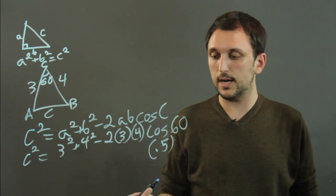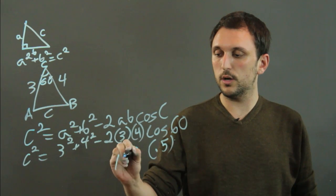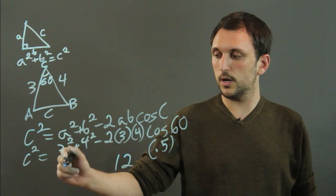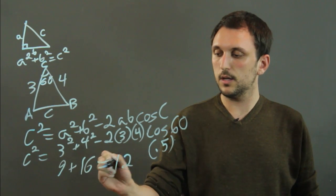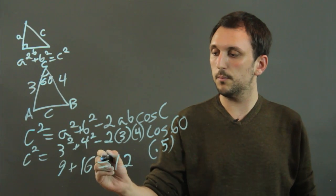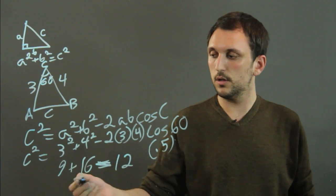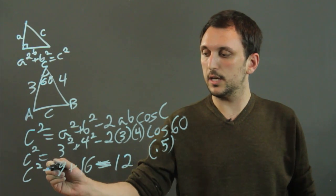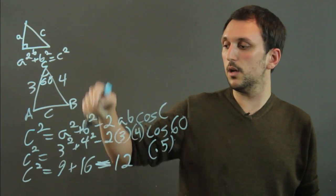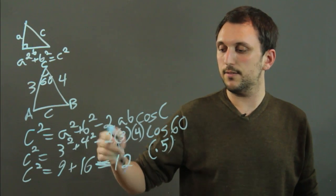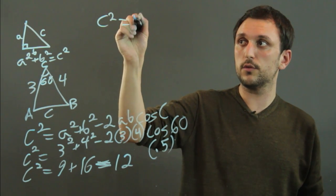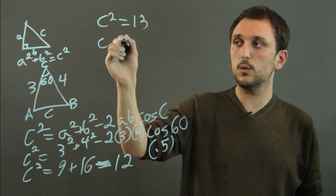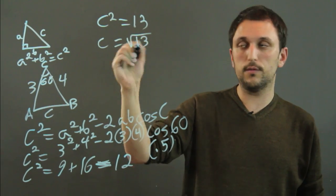So we have 12 over here we have 3 squared is 9 plus 4 squared which is 16 minus 12 and c squared is going to equal all that so we'll bring the math up here 9 plus 16 is 25 minus 12 is 13 so c squared equals 13 c will equal the square root of 13.